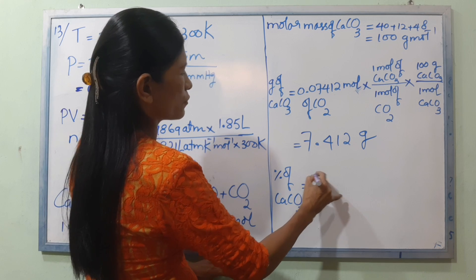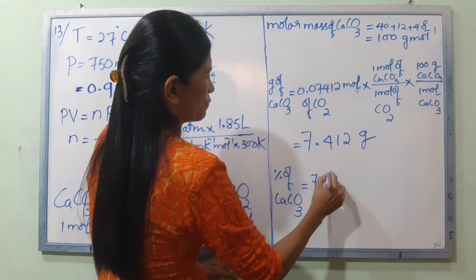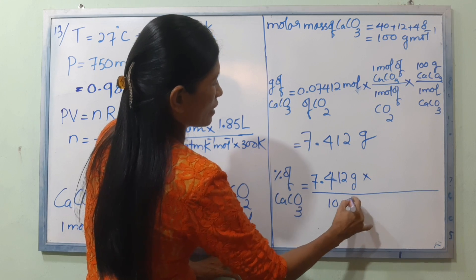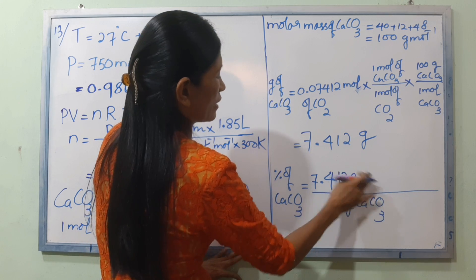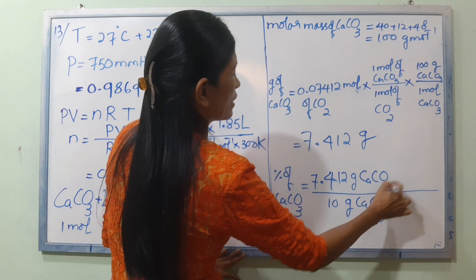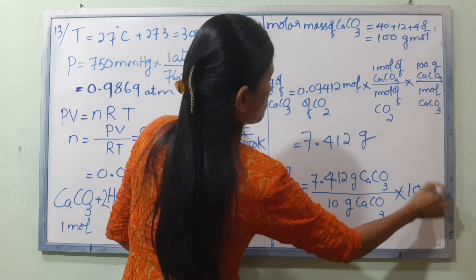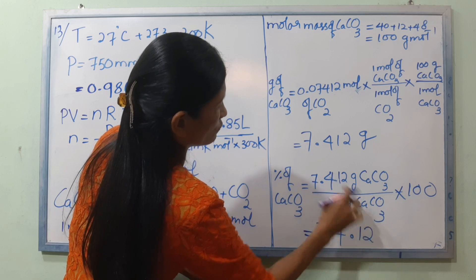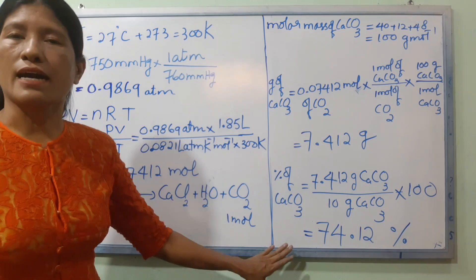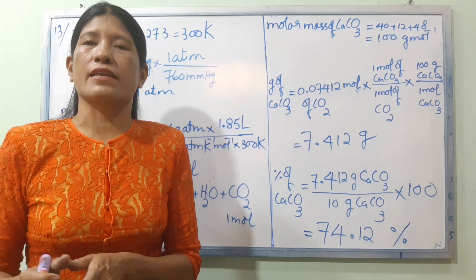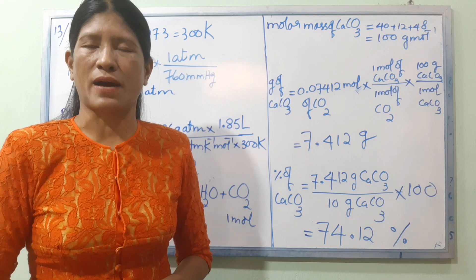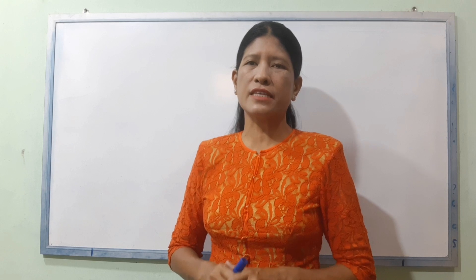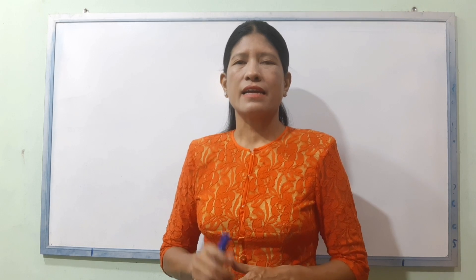The mass of CaCO₃ would be 0.07412 mol times 100 g/mol equals 7.412 grams. Until next lessons. Bye-bye.